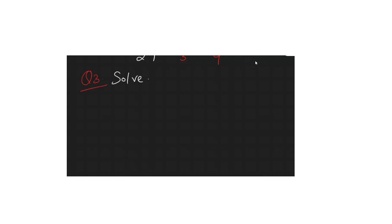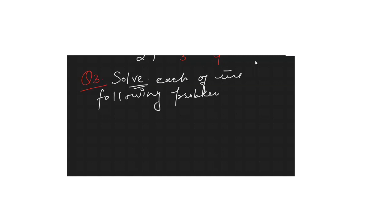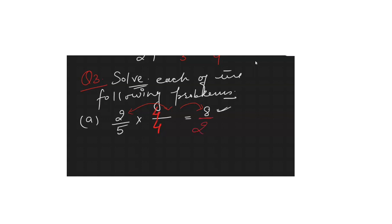Question 3 says: solve each of the following problems. It says find an equivalent fraction of 2/5 having numerator 8. Since numerator 8 is given, you cross-check: which number multiplied by 2 gives 8? That is 4. So multiply both numerator and denominator by 4: 2×4 = 8 and 5×4 = 20. The answer is 8/20.